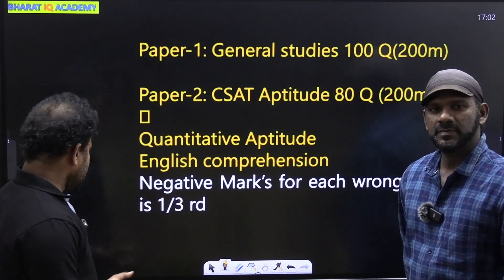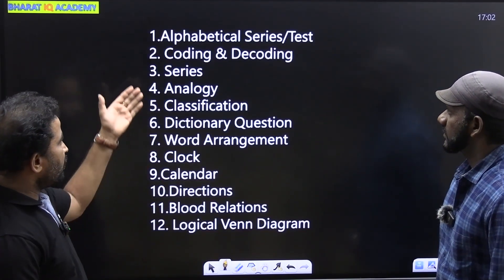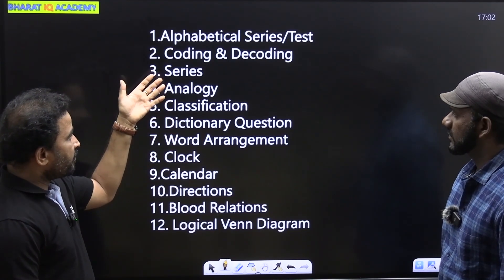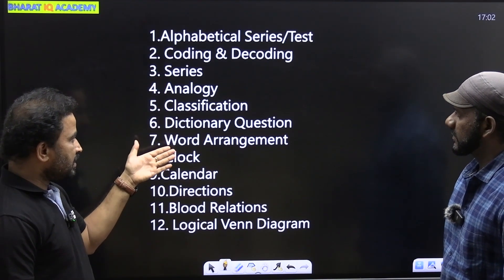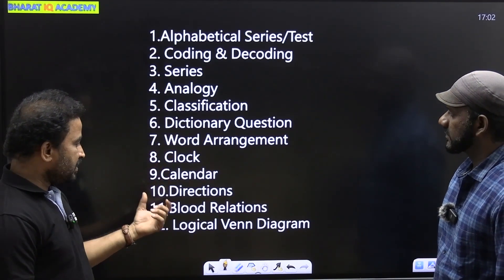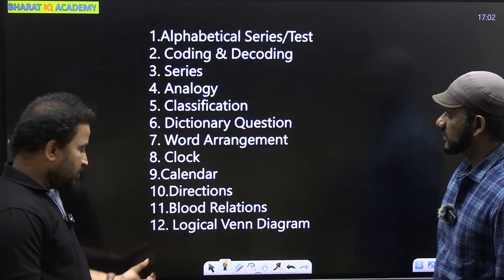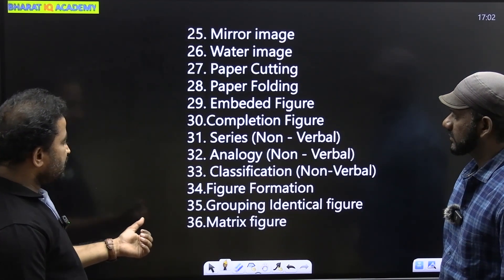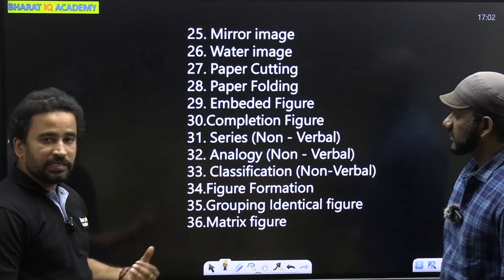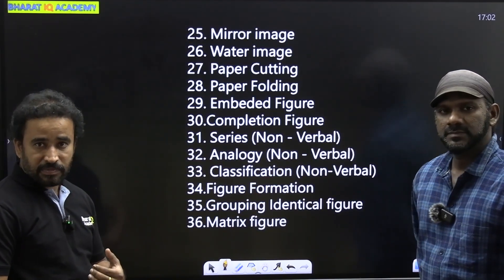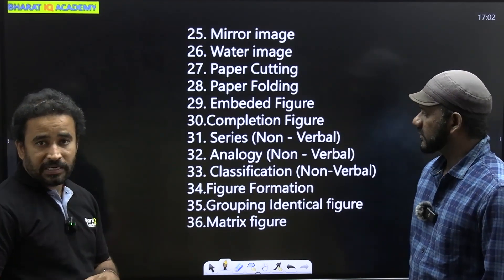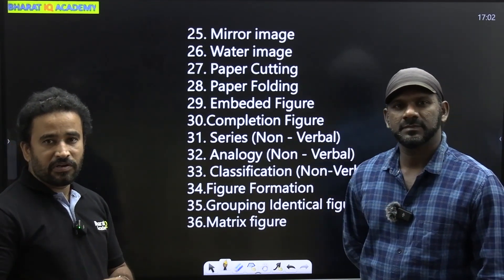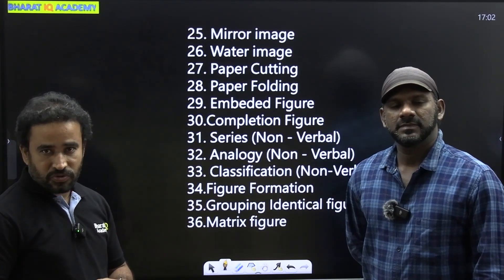In this section, Quantitative Aptitude and Reasoning syllabus includes: alphabet test, coding-decoding, series analysis, and classification. Overall, we have 36 chapters that we will be discussing.